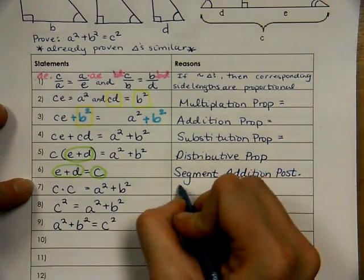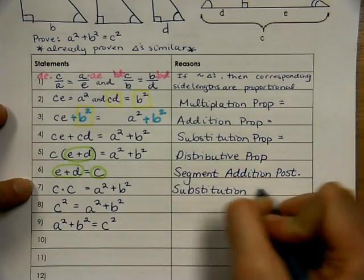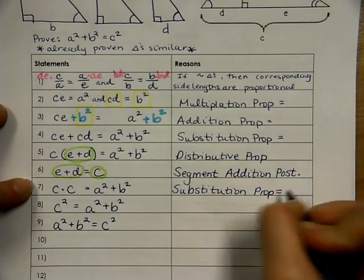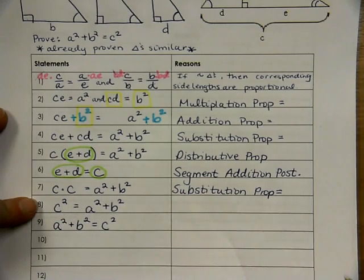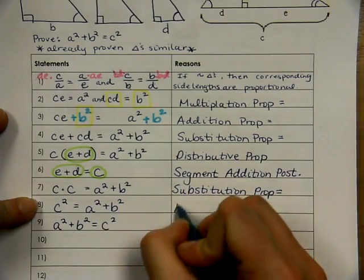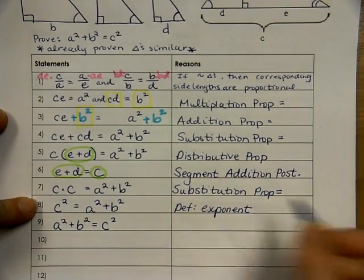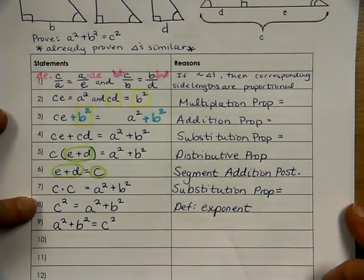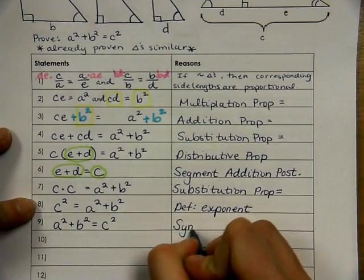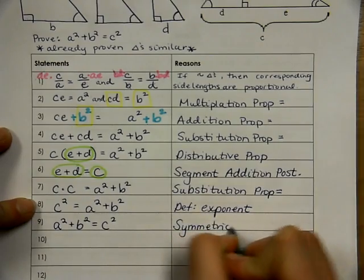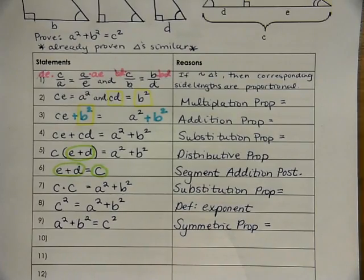And then we could substitute in for E plus D. Once we substitute in, we know that C times C is C squared. And I don't really have a good reason for that, other than it's the definition of what an exponent is. You're not going to see that on any proofs on quizzes or tests. And then from here, this would be our symmetric property of equality. And here is the proof for the Pythagorean theorem.